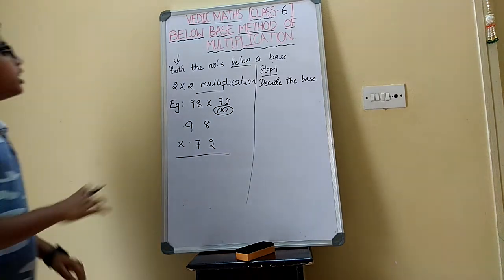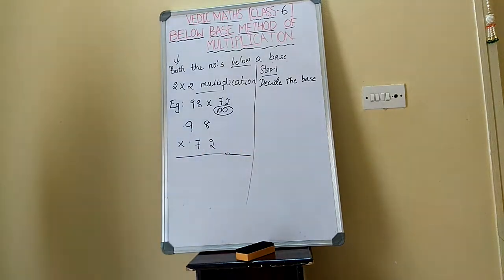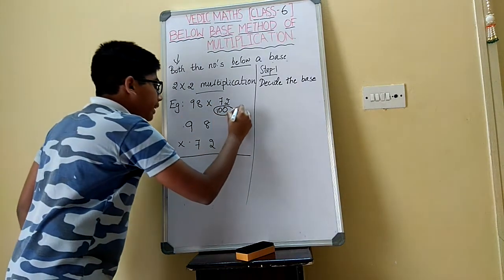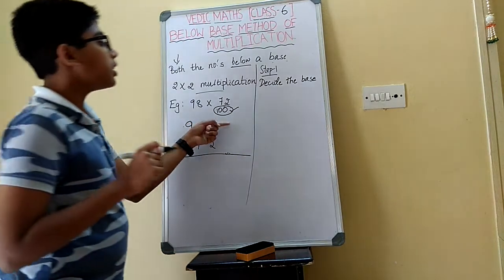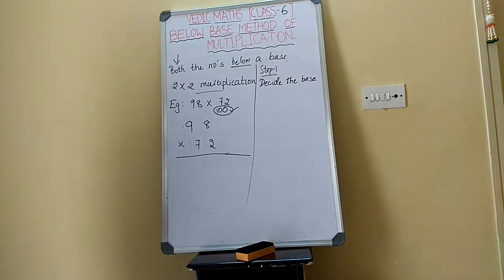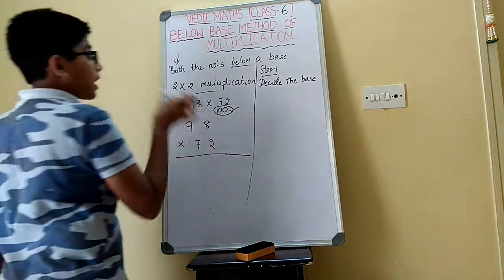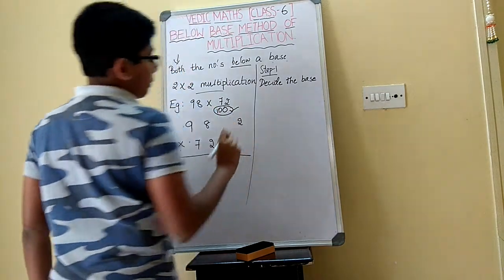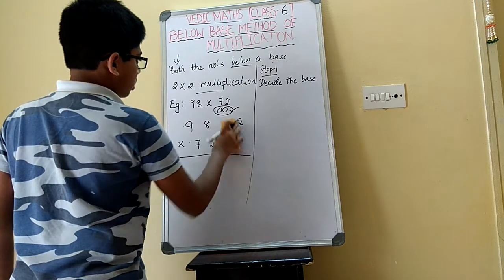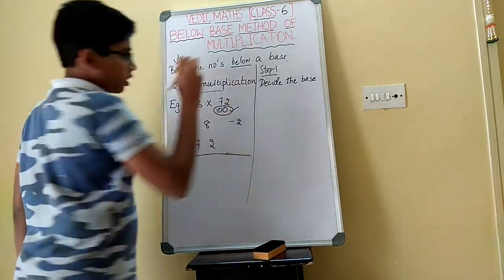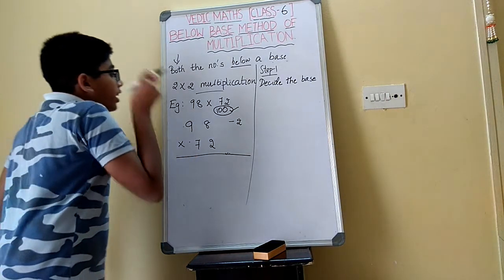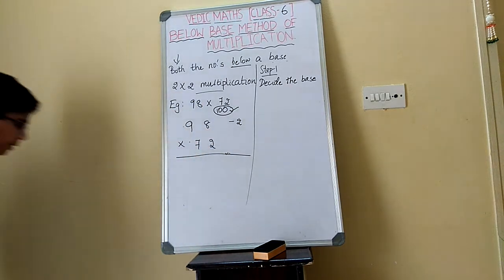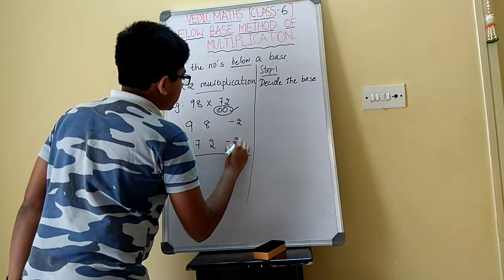I have left some empty space, and I need to fill it now. Which number should I subtract from the base to get 98? That number must be written next to 98. If I add some number to 98, I get 100; if I subtract the same number from 100, I get 98. That number is 2, but you need to write minus 2. Then for 72: from the base, when I subtract some number I get 72. That number is 28, so write minus 28.